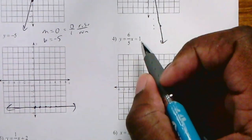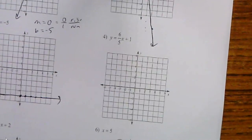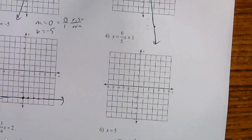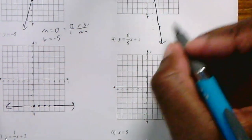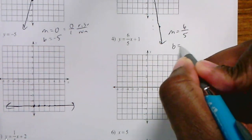Let's do another one. Here it says graph 6 over 5x plus 1. My slope is 6 over 5, and my y-intercept is 1.